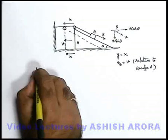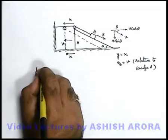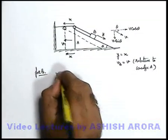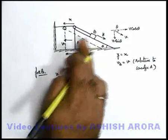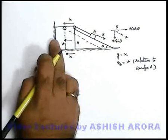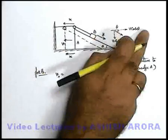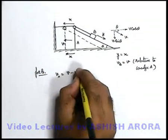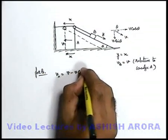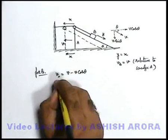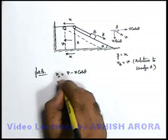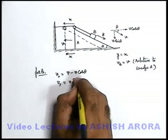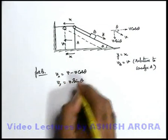So in this situation for block B, we can write: velocity in the x-direction — toward the left it is v, toward the right it is v cos theta, so it must be v minus v cos theta. And its velocity in the y-direction will be v sin theta.